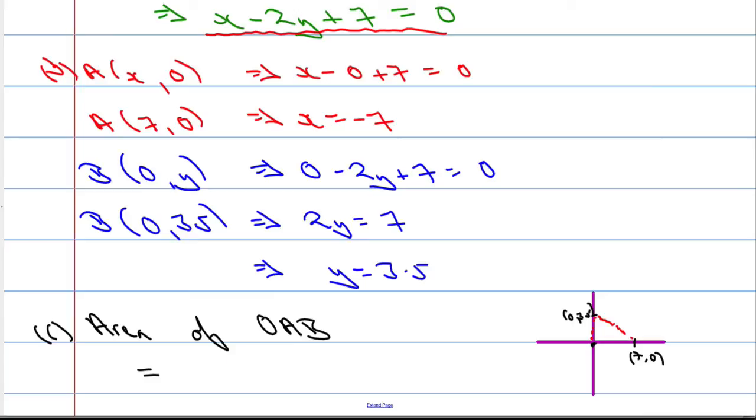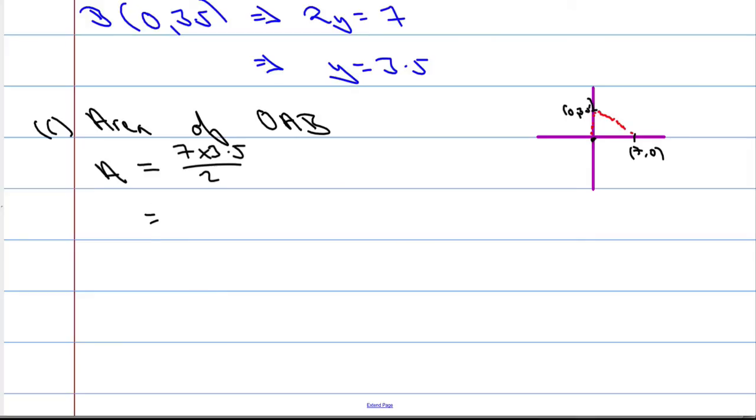The base, in this case, is 7. The height is 3.5. And we need to divide that by 2. So, we're going to do 7 times 3.5. Well, let's do 7 divided by 2 is 3.5. So, we need to do 3.5 times 3.5.